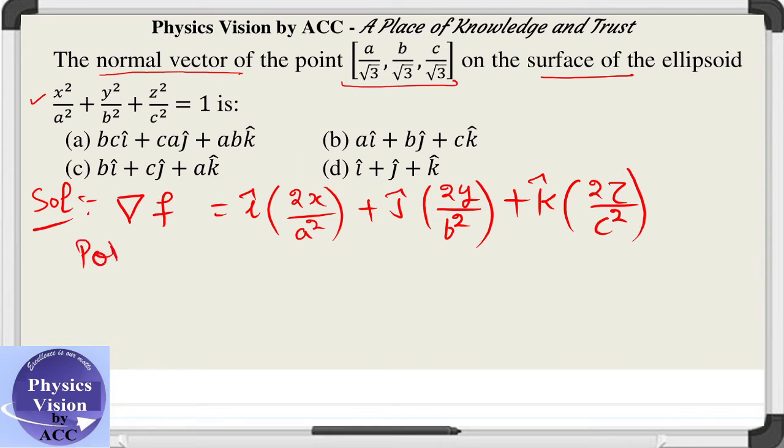Now substitute the value of the given point P. This is the point P given: x equals a by root 3, y equals b by root 3, z equals c by root 3. When we substitute this point.